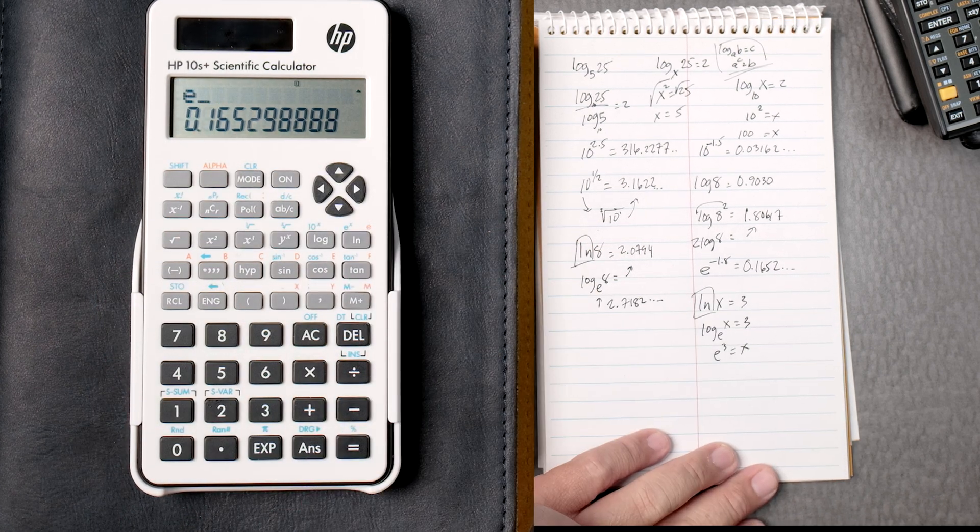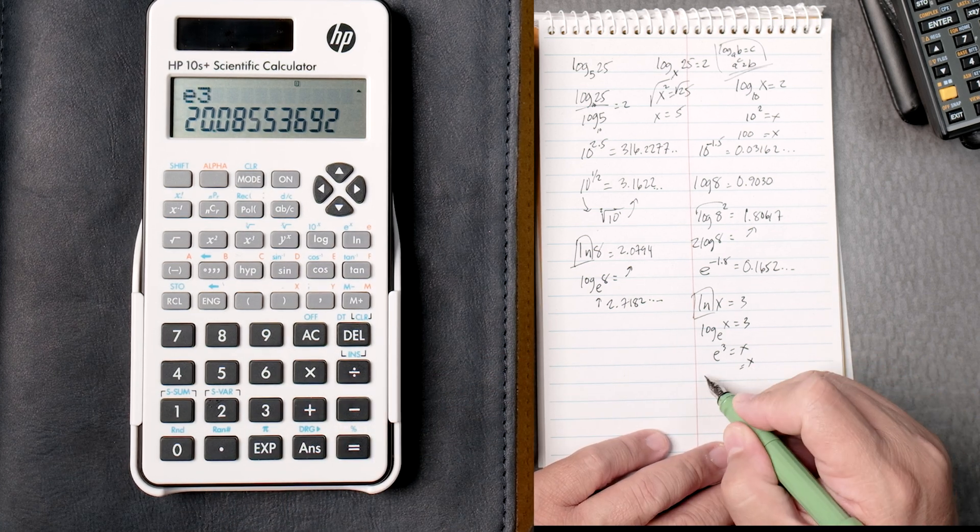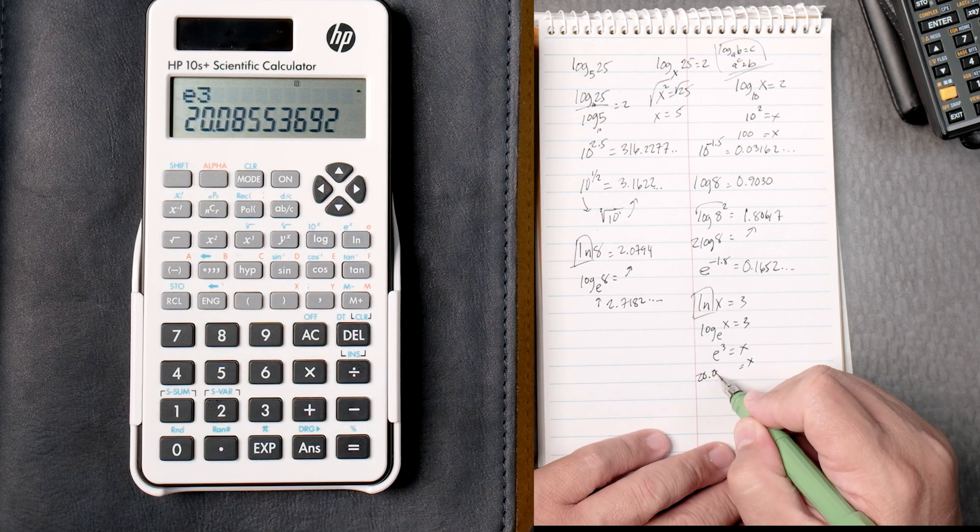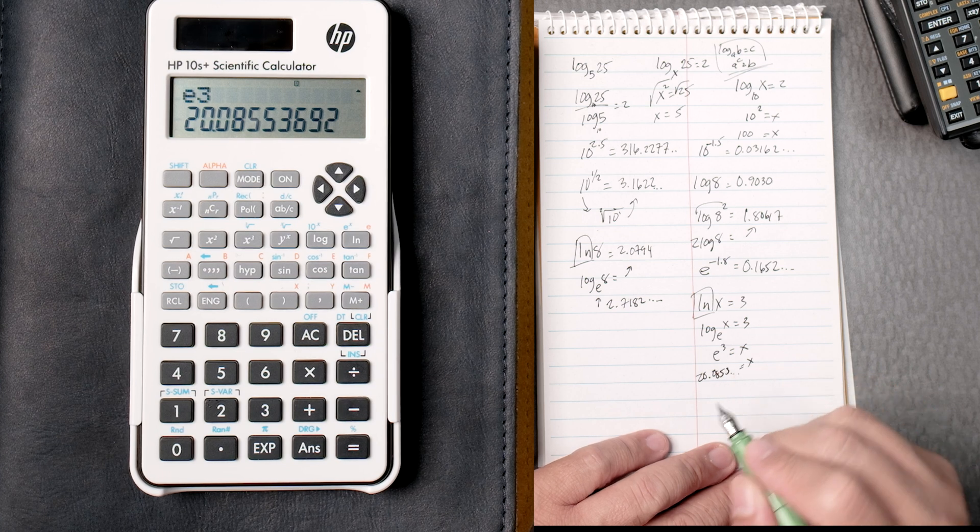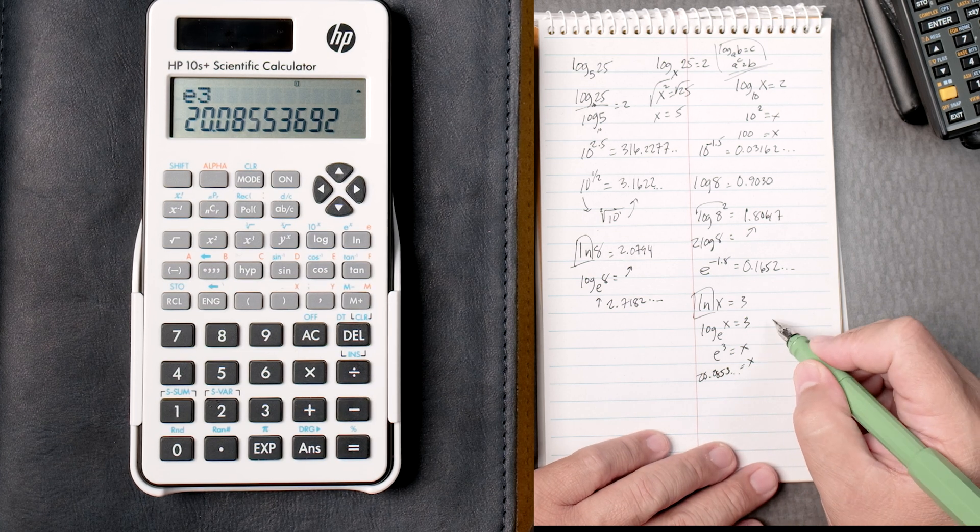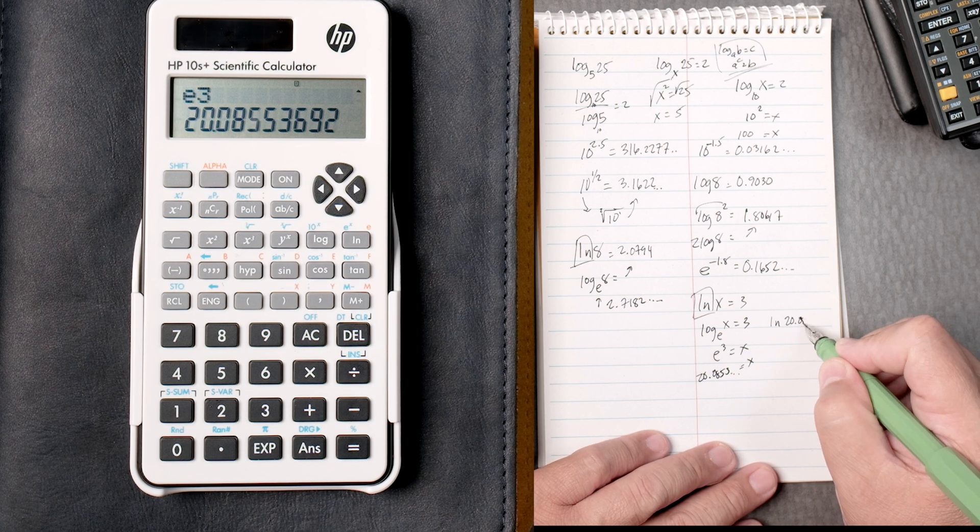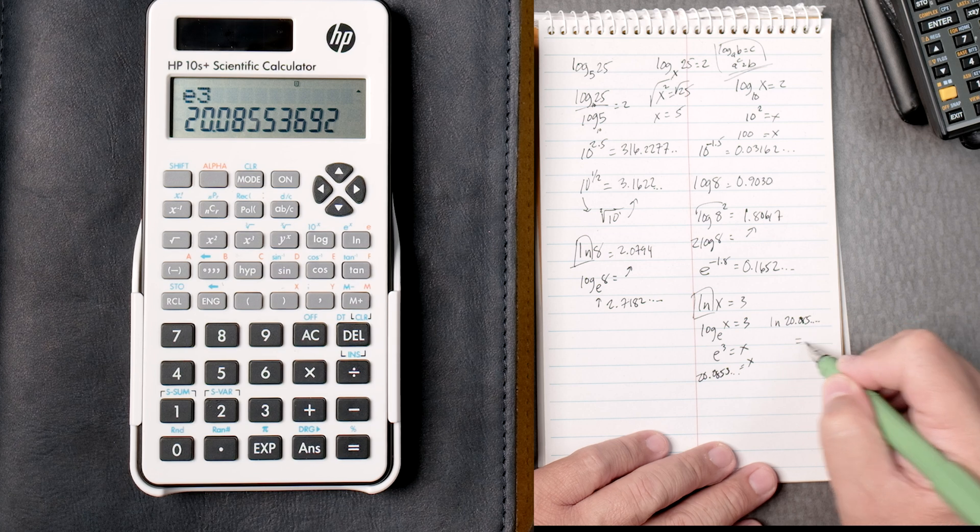Shift log key 3 equals. That gives you 20.0855 and so forth. Now, what does this mean? Well, if you say the natural log of 20.085 and all the numbers, that should give you 3.